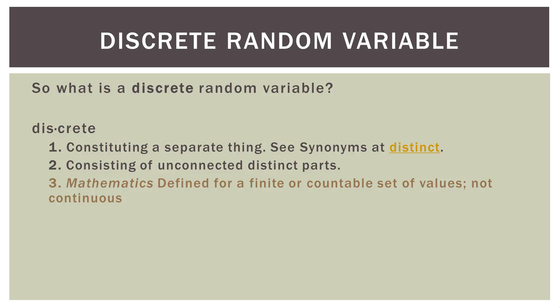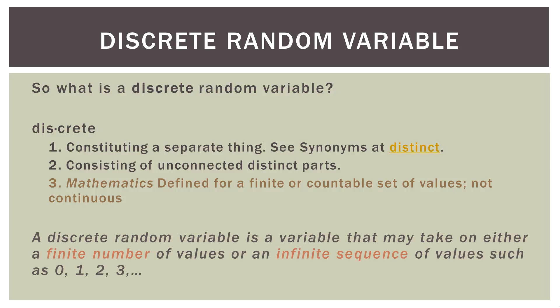The second definition is: consisting of unconnected distinct parts. The heads or tails of a coin are not connected to each other — same with the throw of a die. The mathematics definition says: something defined for a finite or countable set of values, not continuous. With the coin flip we have a finite set — only two outcomes, heads or tails. With the die throw we only have six outcomes, a finite number: one, two, three, four, five, or six.